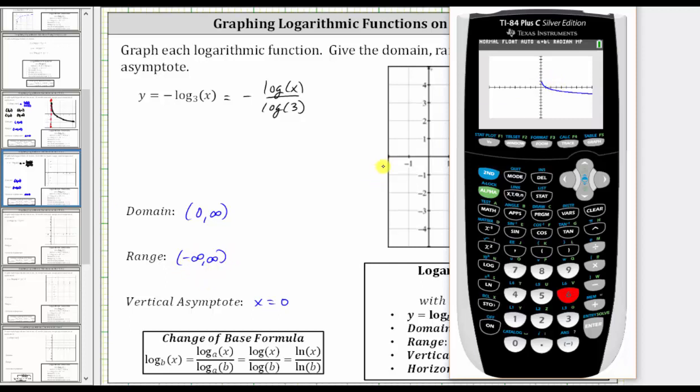But now to make our graph, we want to find some convenient points on the graph. There's two ways of doing this. One way is to press zoom and then four for z decimal, which actually gives us a better window.